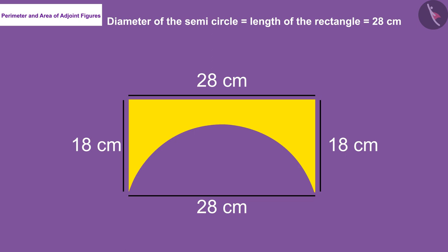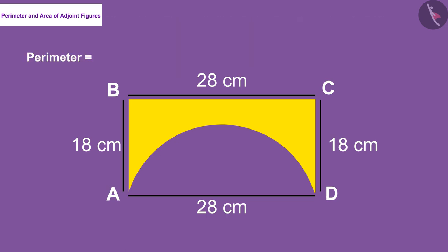The perimeter of the visible figure will be the sum of the values of the sides AB, BC, CD, and DA. We know the values of AB, BC, and CD, but how do we find the circumference of a semicircle?